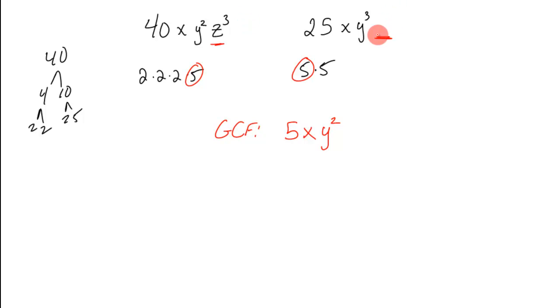Because again, the factors are numbers that multiply together. And they have to have them in both terms to be in common. So that would be our GCF.